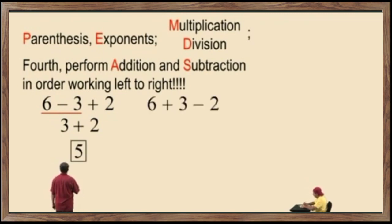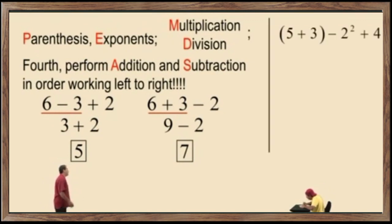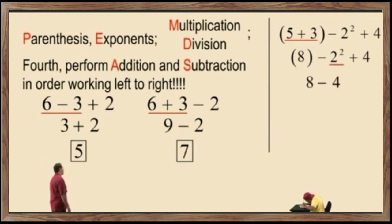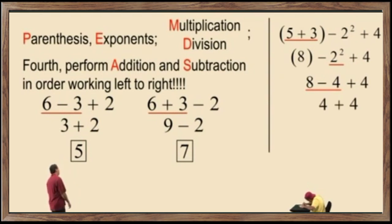Here we have an addition and subtraction, but addition comes first working left to right, so we perform that operation first. That gives us 9 subtract 2, which is 7. Now, up here we have parentheses, a subtraction, an addition, and an exponent. We perform the parentheses first: 5 plus 3 gives us 8. Bring down our work. Next, perform the exponent: 2 squared is 2 times 2, that's 4. We don't require parentheses around the 8. Since subtraction comes first working left to right, 8 subtract 4 is 4, plus 4 is 8. Our answer is 8.